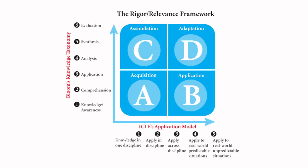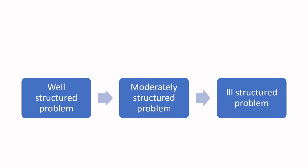When we overlay these two aspects of the knowledge taxonomy with our ability to apply it, this is what we call the rigor relevance framework. We think about: if we have certain basic knowledge, can we apply it in predictable ways or unpredictable ways? And depending on how high in Bloom's taxonomy our knowledge is, that allows us to problem solve in more complex ways. Well-structured problems have a very convergent, limited number of possible solutions.